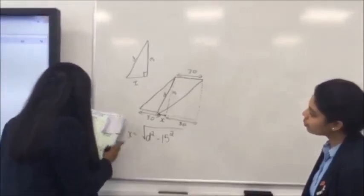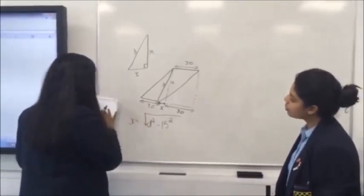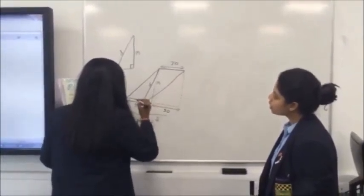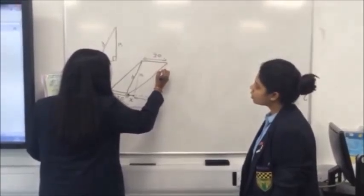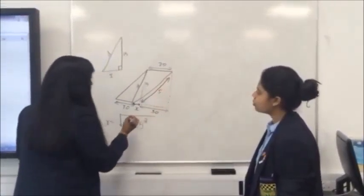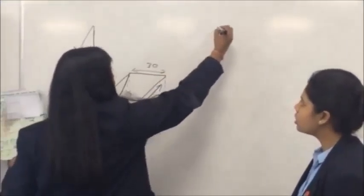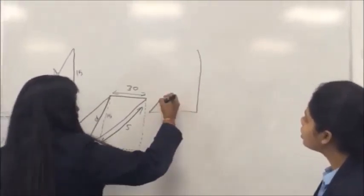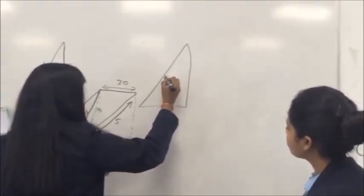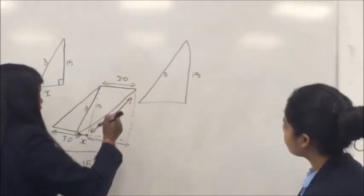So, now that's X, we're going to use that to help us find this bit. This line over here, which we are going to call S. Now, first, can you spot that triangle over there? So, we're going to draw that out here.